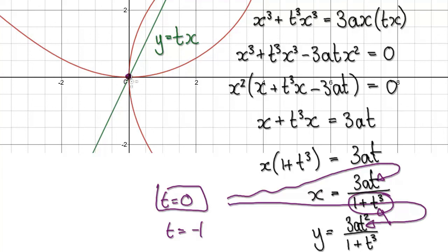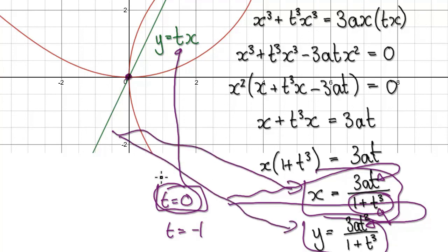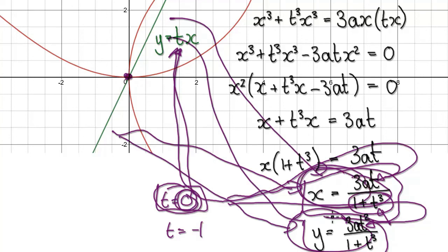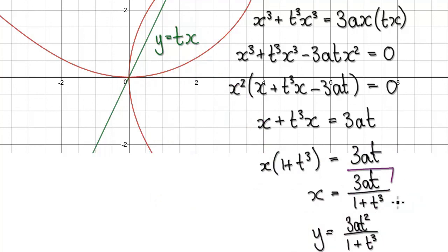Because when T equals 0, the point will be dead on the origin. Once we are at the stage of having the parametric equations, we no longer care about the straight line. We used a straight line to come up with these equations, but once we've got them, we don't need the straight line anymore. So T equals 0 will still work for our parametric equations.